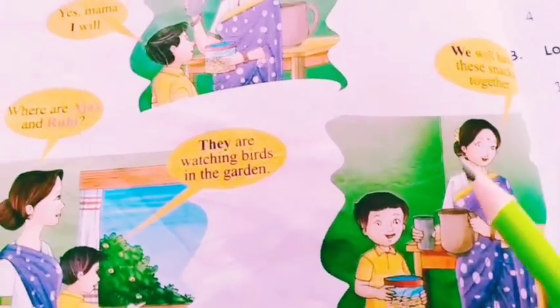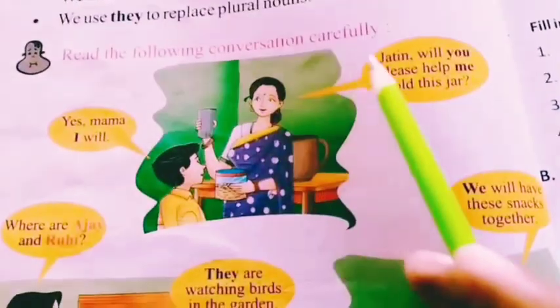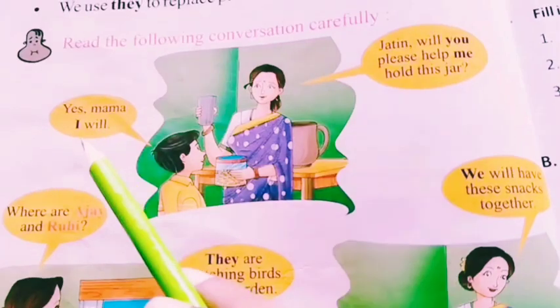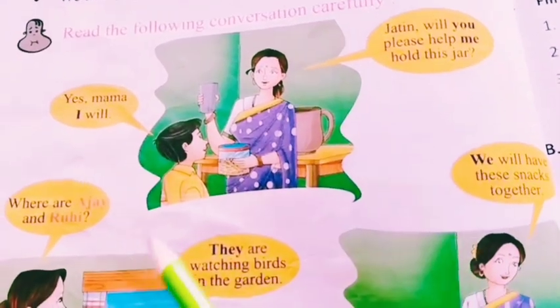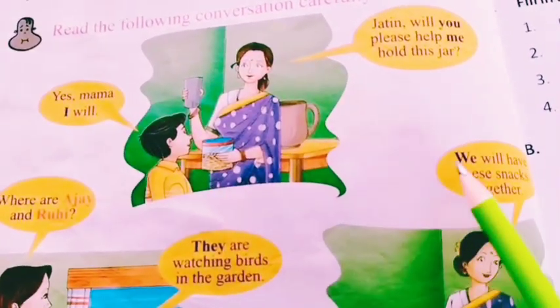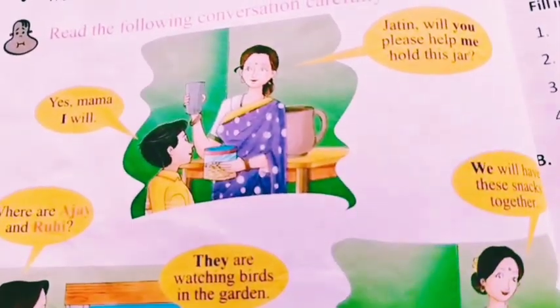Look at the picture here. Who is using 'you'? Here is 'I'. Here is 'they'. Here is 'we'. Do you understand?